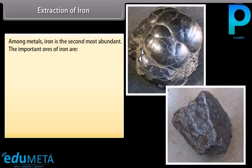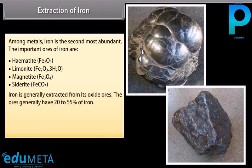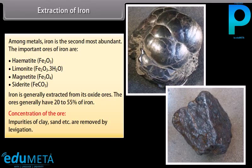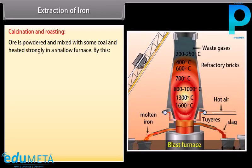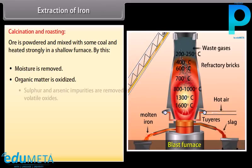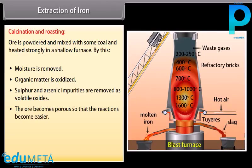Extraction of Iron: Iron is generally extracted from its oxide ores, which generally have 20 to 55% iron. Concentration: impurities of clay, sand, etc. are removed by lavigation. The ore is then powdered and mixed with coal and heated strongly in a shallow furnace. By this, moisture is removed, organic matter is oxidized, sulphur and arsenic impurities are removed as volatile oxides, and the ore becomes porous so that reactions become easier.